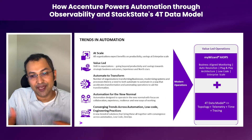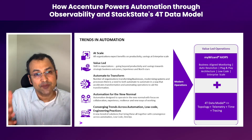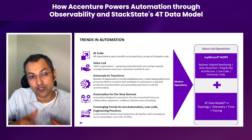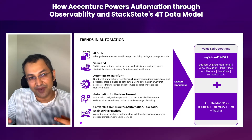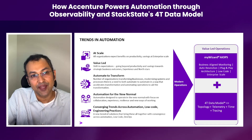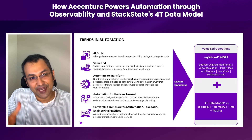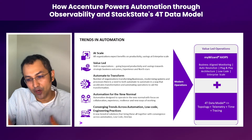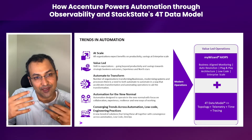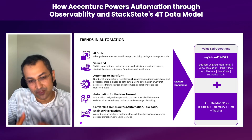So what do all of these mean when applied in an operations world around applications and infrastructure management? To do value-led automation, tying to all of these themes, we saw a very good opportunity in bringing together the best capabilities of My Wizard — the strong suite of automation around monitoring, auto resolution of tickets and tasks, plug-and-play architecture, and the ability to scale at an enterprise level — together with StackState and the 4T model, tying all of this together with topology, time, tracing, and telemetry to have a much more impactful solution.